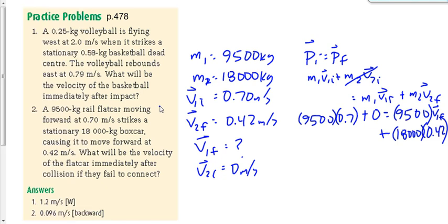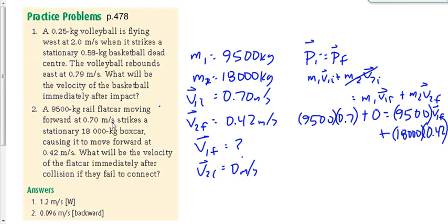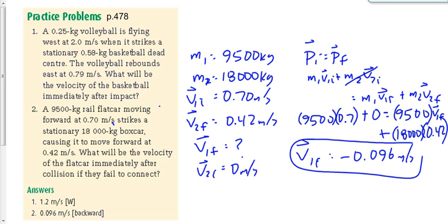You guys see my mistake? 9,500 times 0.7. Is that right? Oh yeah, I'm looking at the wrong answer there. So V1f ends up being equal to negative 0.096 meters per second, which of course means it's backwards. If we define forwards as positive, which I think probably everybody would in this question.